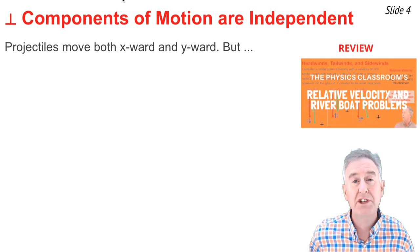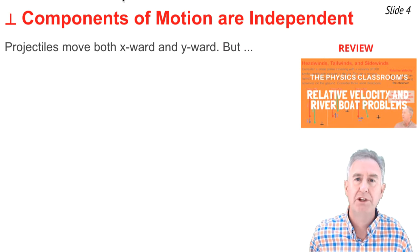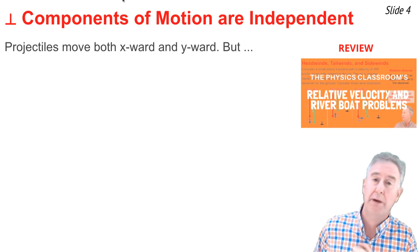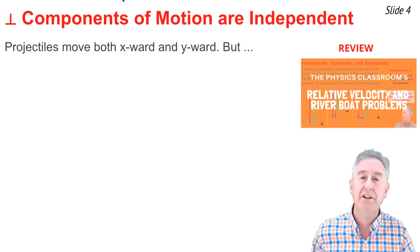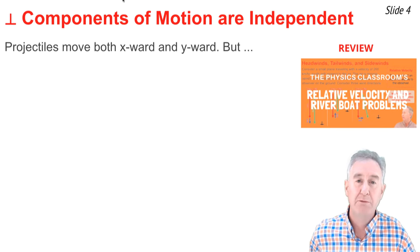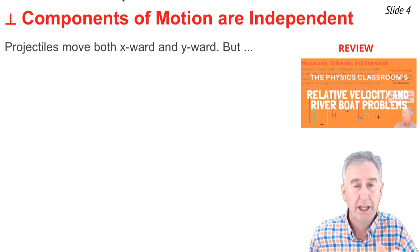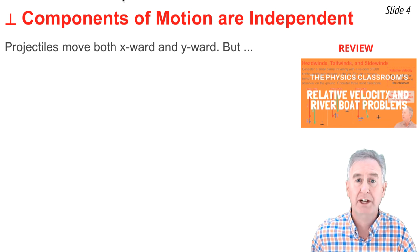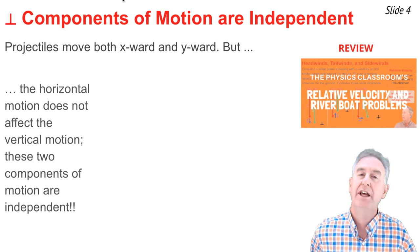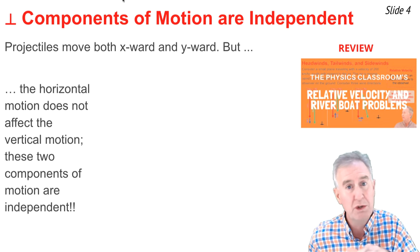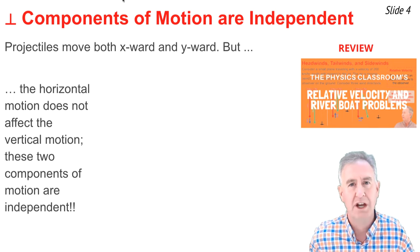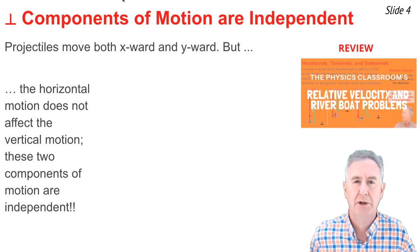In a previous video, we discussed the idea of perpendicular components of motion being independent of one another. That video was titled Relative Velocity and Riverboat Problems — it's worth a review. Projectiles move both horizontally and vertically, and what we know about the motion of a projectile is that these two components of motion are independent of one another. That is to say that the horizontal motion of a projectile does not affect the vertical motion, and vice versa.